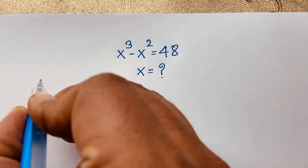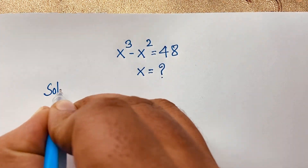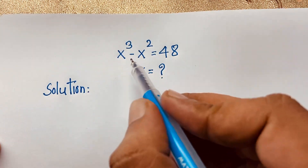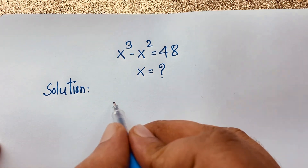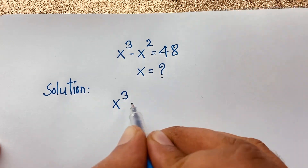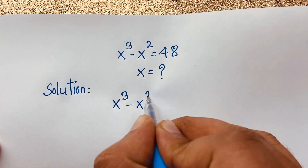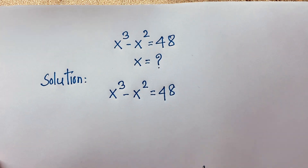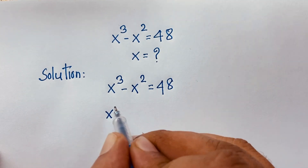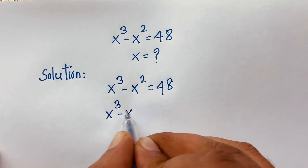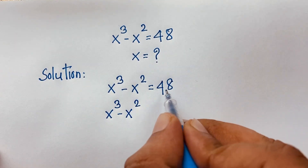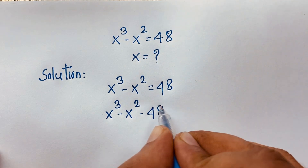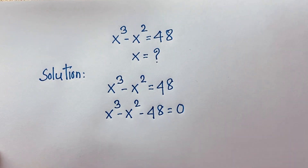Solution. Our question will be x to the power 3 minus x to the power 2 is equal to 48. Now, you can see this expression — x to the power 3 minus x squared — and if I move this 48 to this side, it will be negative 48 is equal to 0.